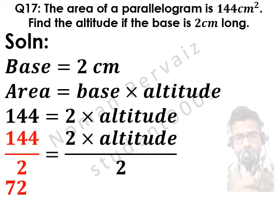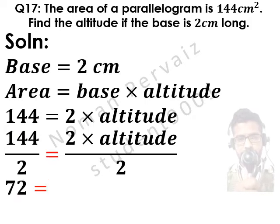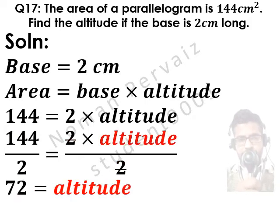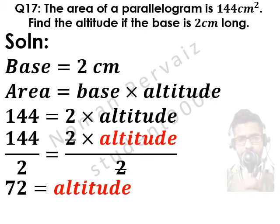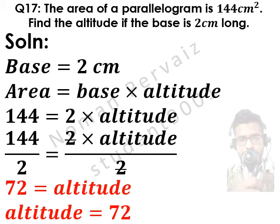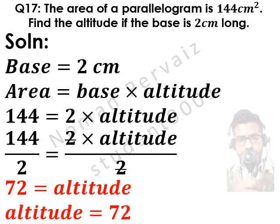Now putting in the values: the area of the parallelogram is 144, and the base is equal to 2 cm. So the altitude is equal to 144 divided by 2, which gives us 72 cm.